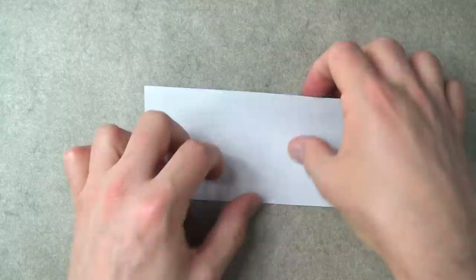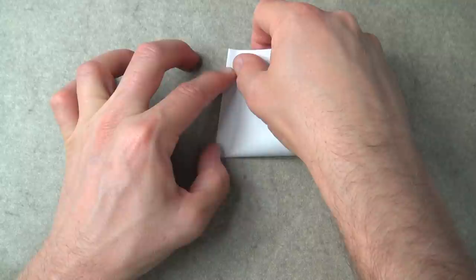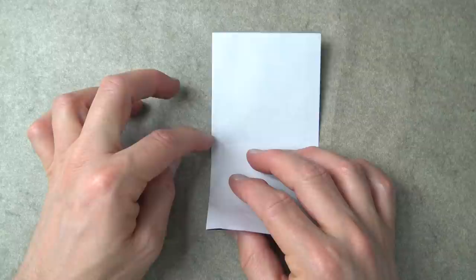Rotate and now fold in half in this direction, but we're just going to make a pinch mark on the left side. Bring these two corners together and flatten right there. Unfold, and now fold this corner to the pinch mark. Make sure that these edges align.